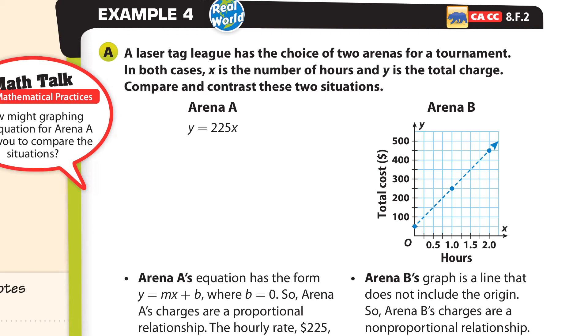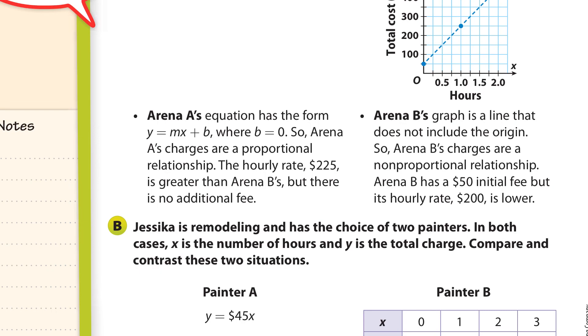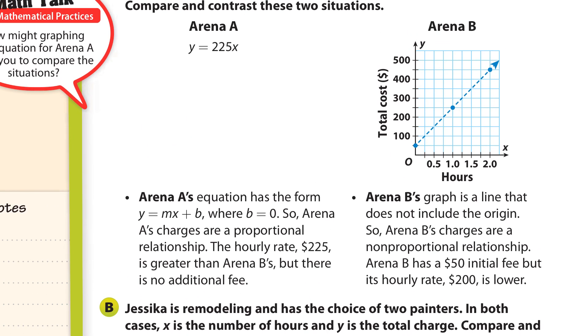So we will see that in arena A, the hourly rate is 225 dollars per hour. Because there's no y-intercept right there. It's zero. And in here, we have an initial fee of 50 dollars. That's the y-intercept. But the hourly rate, it goes up here. That's 50. And that's 250 for one hour. This goes up 250 dollars for one hour. So there you go. That's how you can compare them.